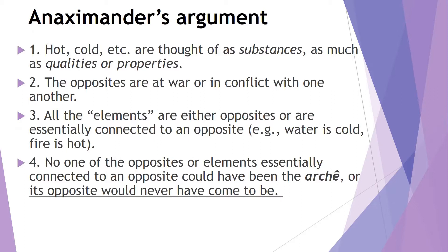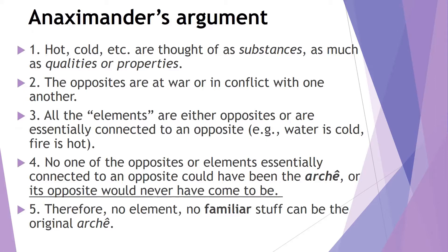No one of the opposites or elements essentially connected to an opposite could have been the archē. No, no, it doesn't make sense. Its opposite would never have come to be. So this is Anaximander doing something that is still a classic tradition in philosophy. He appreciates his teacher. He is glad for the insight that he gained from Thales, but he has an argument showing that Thales couldn't possibly be correct because we draw the conclusion now that no element, no familiar stuff can be the original archē. So this rules out water. So Anaximander has this argument that he uses to show that Thales is wrong about the archē. And this is his reasoning. So this is new. This is something different to have people in the culture reason carefully about the things that exist, have clear arguments about those things. This is something new that the pre-Socratics provided for us.